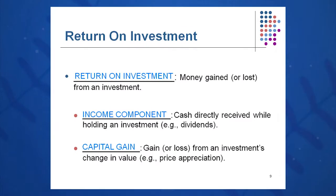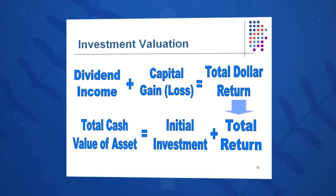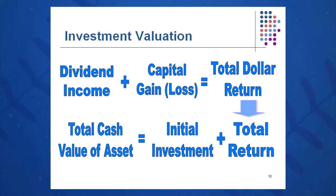Return on investment is money gained or lost from an investment. You might have a positive return or a negative return. In your investing lives you'll see an income component and a capital gain component. When you buy a stock you're looking for price appreciation — the capital gain — and you might also be looking for a dividend. Total return equals dividend income plus capital gain or loss, giving you your total dollar return.